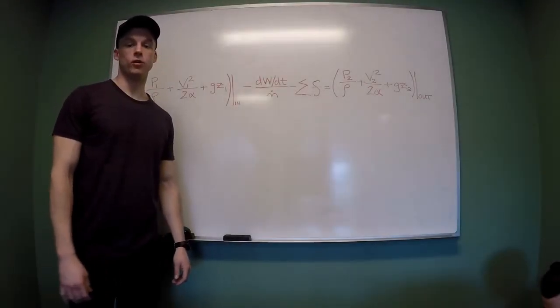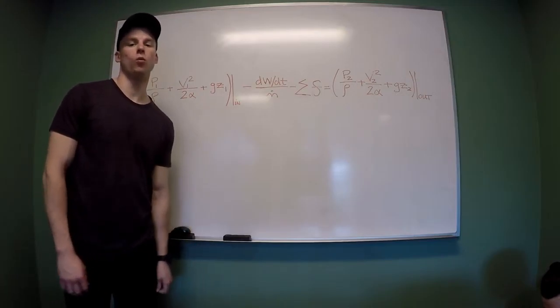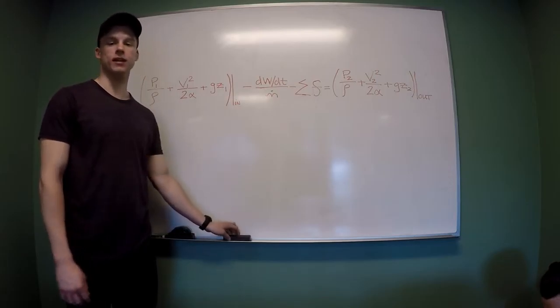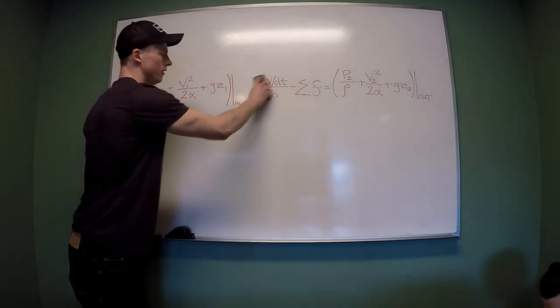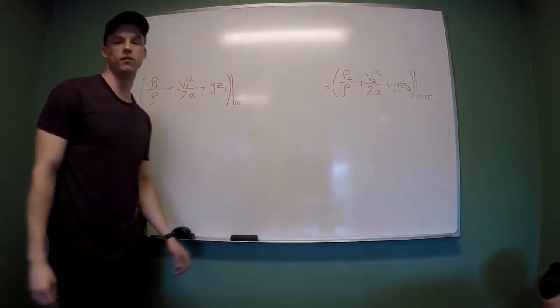The Bernoulli equation is derived from the mechanical energy balance equation. When there is no work being done on the system, and there is no friction present in the system, we can remove these two terms from the mechanical energy balance equation, and we're left with the Bernoulli equation.